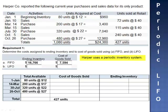With Periodic LIFO, we've still sold 427 units, but we expense the units in reverse chronological order. The last 427 units to come into inventory will be the units expensed. Cost of goods sold is 427 of the 480 units purchased on October 26th, for a cost of goods sold of $11,529.